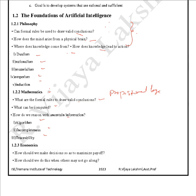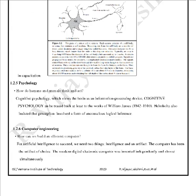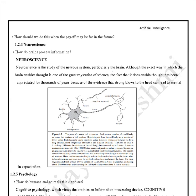Any algorithm proposed using mathematics should satisfy these properties. Economics also contributed to the development of AI. What AI has learned is how to make decisions to maximize payoff, and how to do this when others may not go along. These are things we have to consider so that AI should be useful for us.